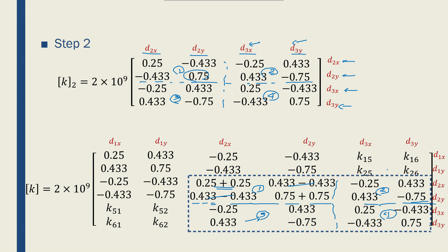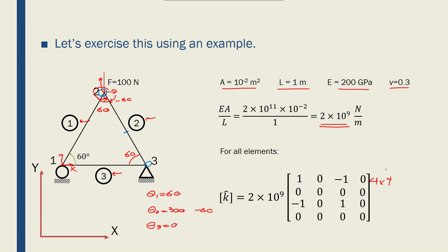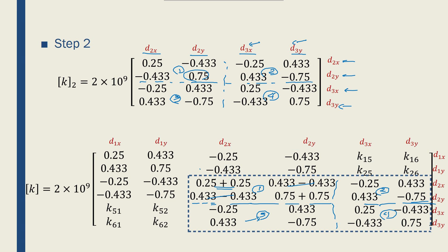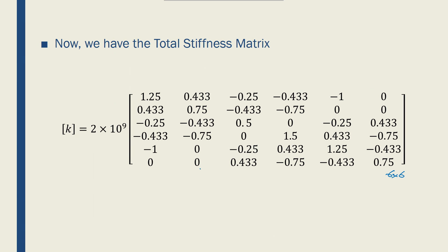Going back to the first slide: this truss structure has its total stiffness matrix as shown here. We no longer put a hat on it because it is defined in the global coordinate system. The numbers came from the individual global stiffness matrices of each element.